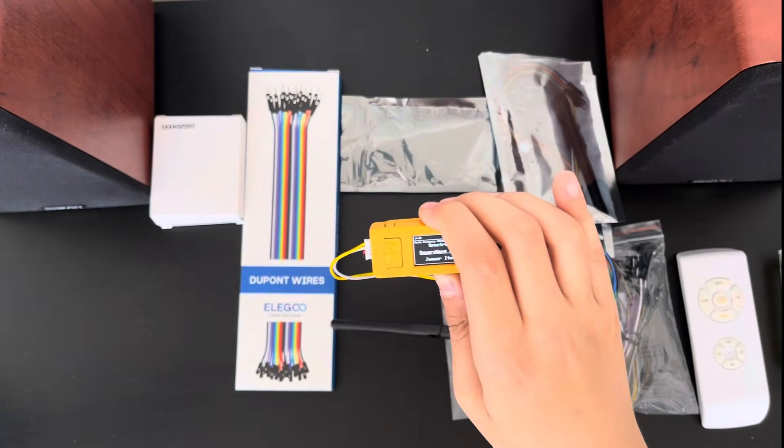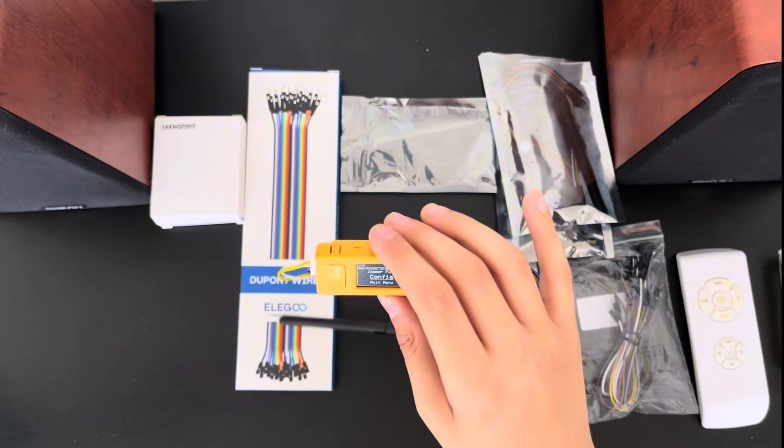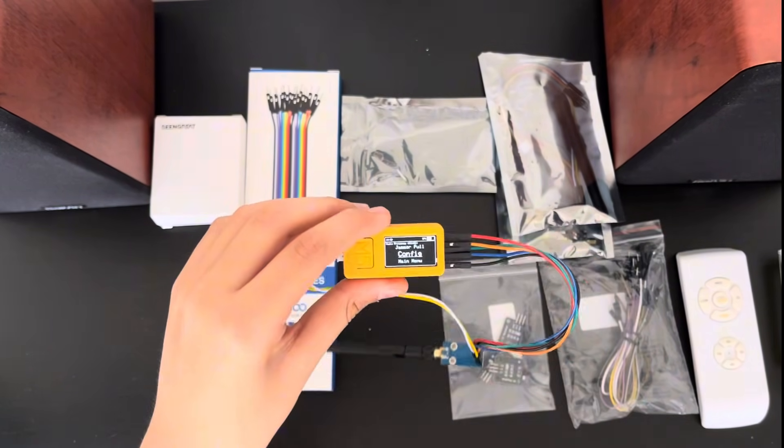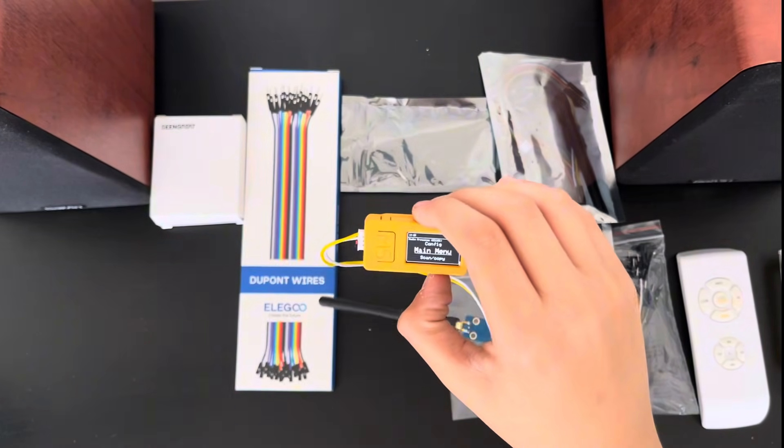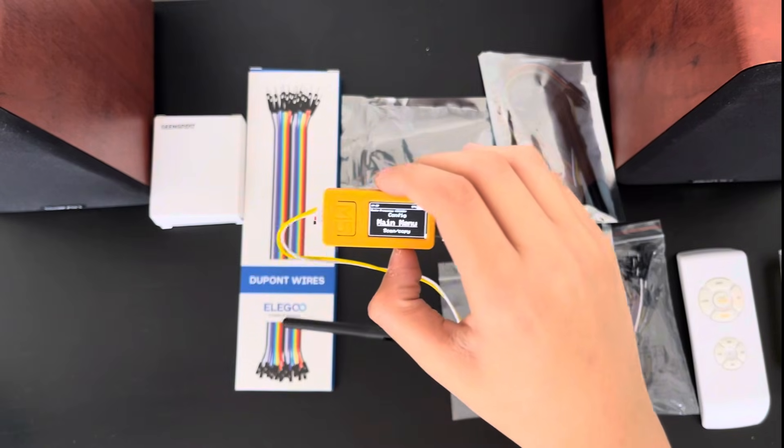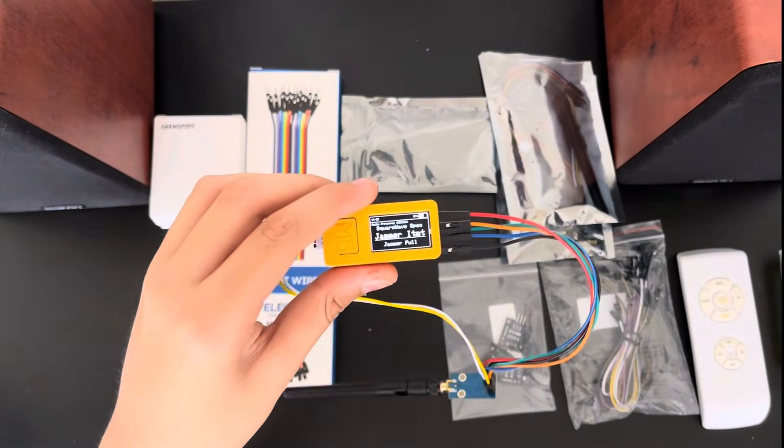You can also run sub-gigahertz radio frequencies, and you can open up different types of Hampton Bay fans, different types of LED lights. You can all control with this little module once you download the proper file. You can find them on GitHub. You can find them on all these things. So it's also a built-in jammer, built-in with Bruce.